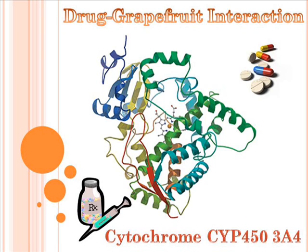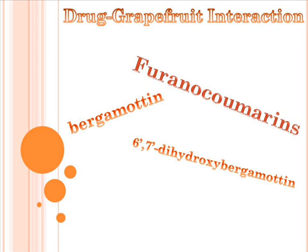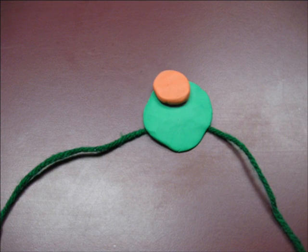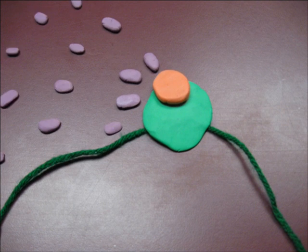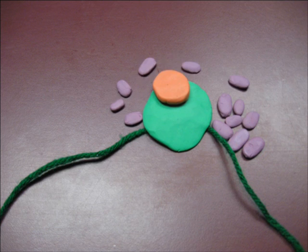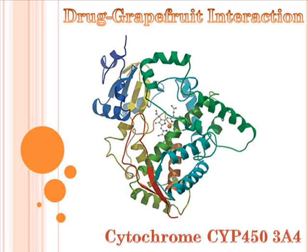Therefore, cytochrome CYP450 3A4 acts as the first line of defense against chemicals in the body, including drugs and medicines. Furanocoumarins like bergamotin and 6,7-dihydroxybergamotin found in grapefruits inhibit the cytochrome CYP450 3A4 enzyme through mechanism-based inhibition. This means that the furanocoumarin molecules modify the active site of the enzyme so that it can no longer function. This modification of the active site is irreversible, so a new enzyme must be synthesized to restore activity.